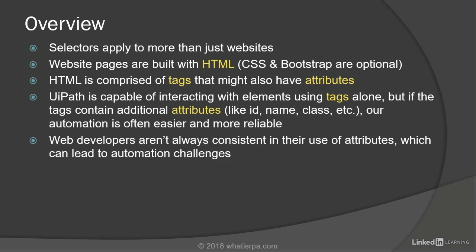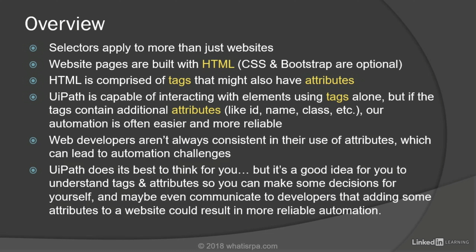Web developers aren't always consistent in their use of attributes, which can lead to automation challenges. UiPath and other modern RPA tools are pretty smart, and UiPath in particular does its best to think for you when capturing selectors. But it's a good idea for you to understand tags and attributes so you can make decisions for yourself, and maybe even communicate to developers that adding attributes to a website could result in more reliable automation. In this section we'll look at web automation basics so you can see how UiPath captures selectors for tags that do and do not have attributes.